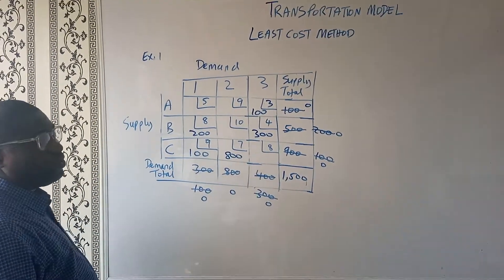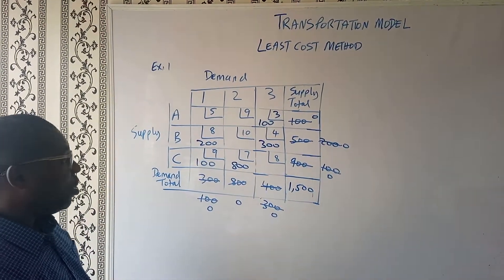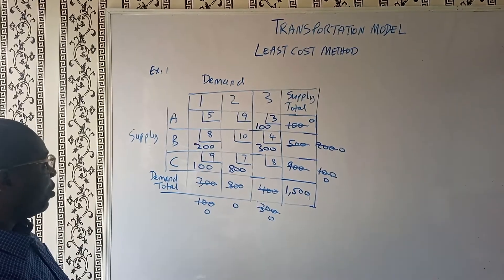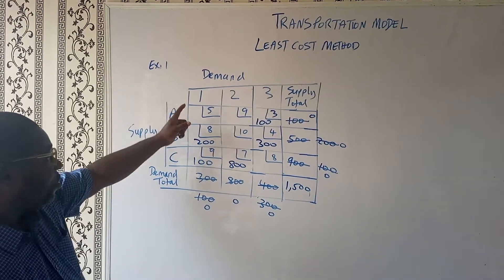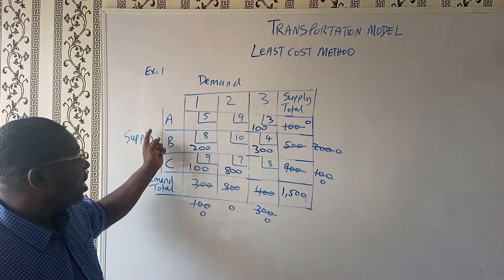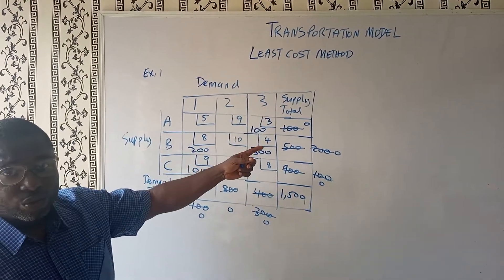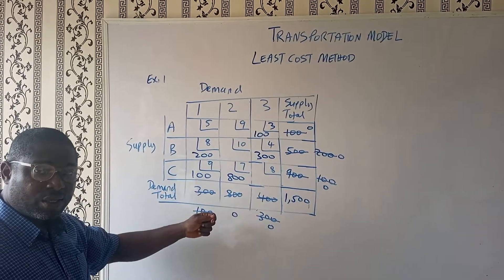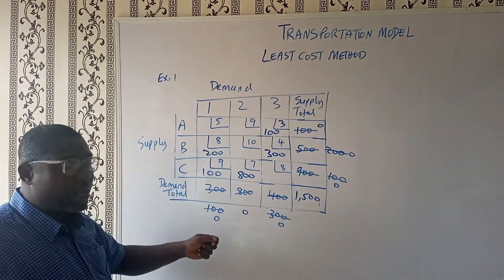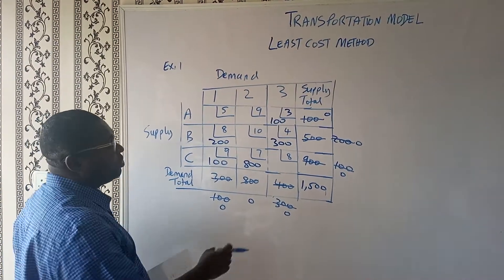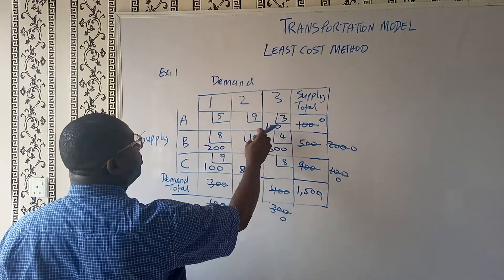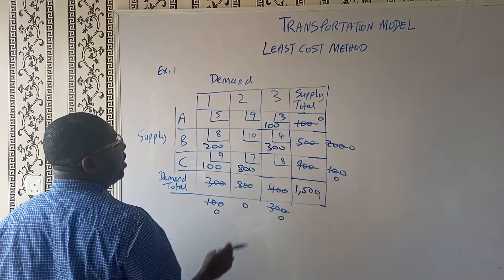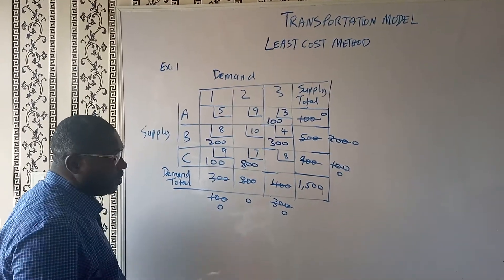So I've been able to fill up all the cells. We need to fill 5 cells because there are 3 columns and 3 rows — that's 3 plus 3 making 6, minus 1 gives us 5. Let's count: 1, 2, 3, 4, and 5. We satisfy that condition.